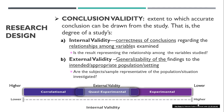Let's explore what we mean by internal validity. Internal validity means the correctness of the conclusion regarding the relationship among variables. So if you say A is statistically significantly related to B, a high level of internal validity implies that that relationship is actually correct.